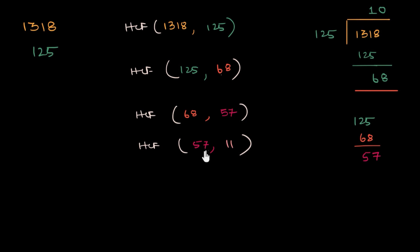So 57 and 11. Find the HCF of these two numbers. Then you say, okay, 11, 5s are 55. So it's not divisible by 57. Or rather, sorry, 57 is not divisible by 11.